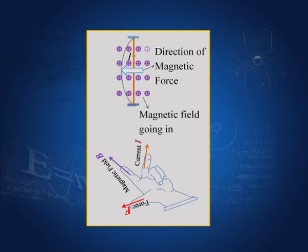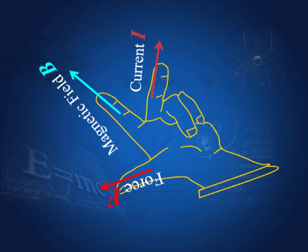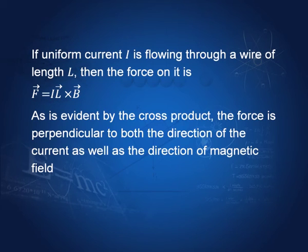This direction is also given by another mnemonic called Fleming's left hand rule. You extend the left hand fingers: one finger represents the current, another represents the magnetic field, and the thumb gives the direction of force on the current. However, my advice would be: do not worry about Fleming's left and right hand rules. What you should learn is the right hand screw rule, which lets you always find the cross product L cross B without making a mistake.